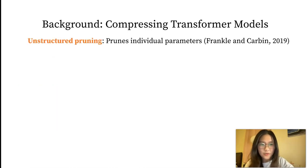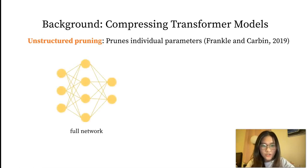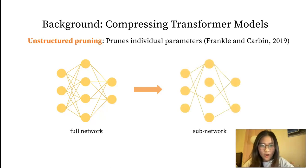The other main approach to model compression is pruning. Unstructured pruning, which is widely known from the lottery ticket hypothesis, prunes individual parameters from a deep neural network. It shows that there exists a subnetwork that preserves the performance of the original full model. However, it's hard to achieve inference speedup because hardwares like GPUs are not optimized for sparse matrix operations.